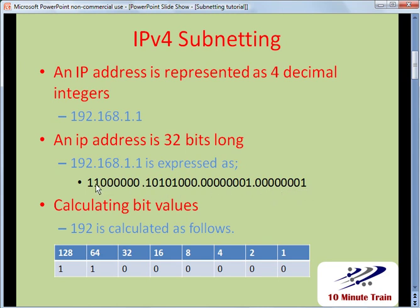So how this works is you need to convert from binary into decimals. Here's how 192 would be calculated. Each bit is assigned a value. You've got 8 values in this table: 128, 64, 32, 16, 8, 4, 2, and 1.